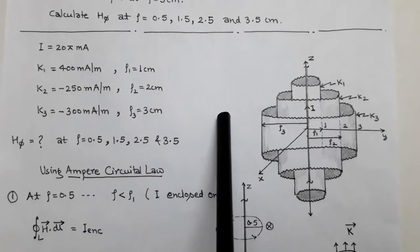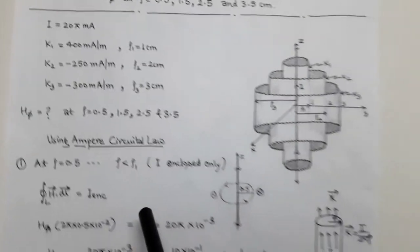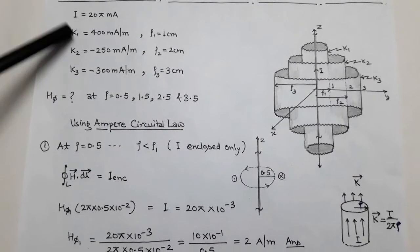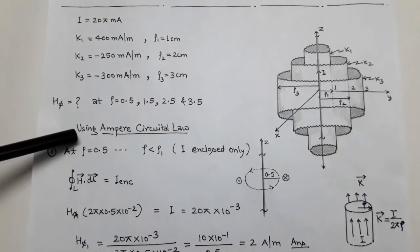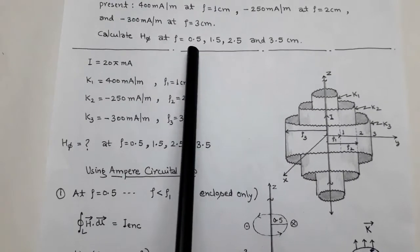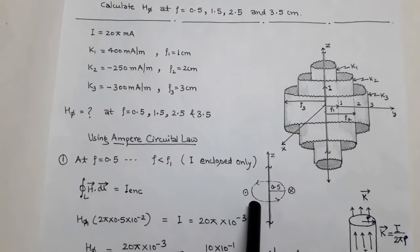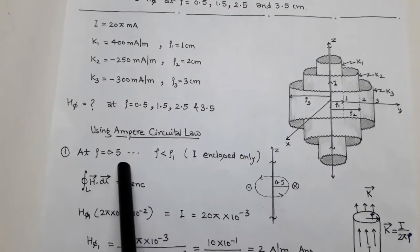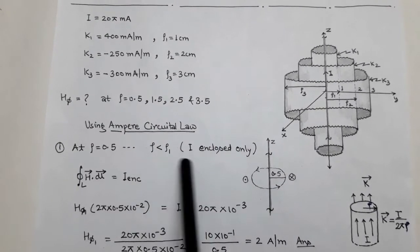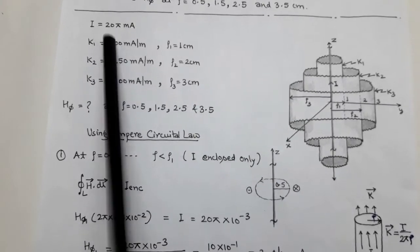To determine H_φ, the phi component of magnetic field intensity H vector, we use Ampere's circuital law because the surface current density and current distribution are symmetrical. By using Ampere's circuital law we assume an Amperian path. For H_φ at ρ = 0.5, we assume a closed Amperian path of radius ρ = 0.5 cm. Since ρ = 0.5 is less than ρ1 = 1 cm, this path encloses only the current I = 25 mA flowing in the positive z direction.